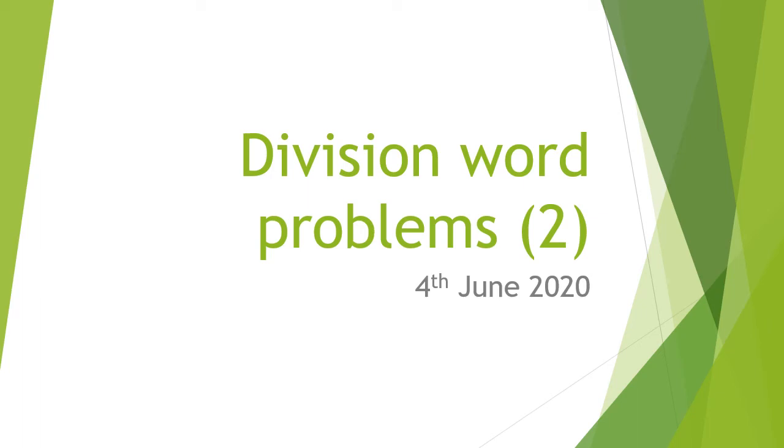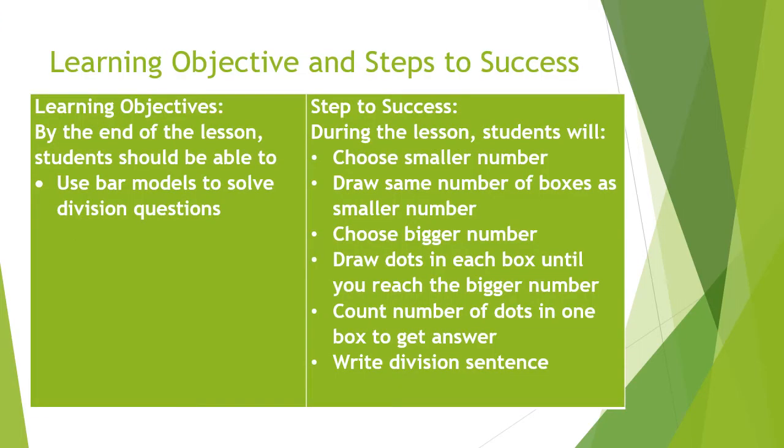Hi again, year 2. This is the second lesson for today about division word problems. This time the learning objective is to use bar models to solve division questions. You have to draw those rectangles, the one that you drew for multiplication last time. The steps to success: choose a smaller number, draw the same number of boxes as the smaller number, choose the bigger number, draw dots in each box until you reach the bigger number, count number of dots in one box to get the answer, and then write the division sentence.